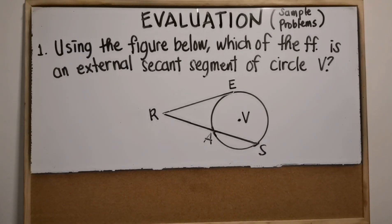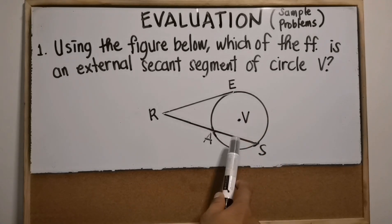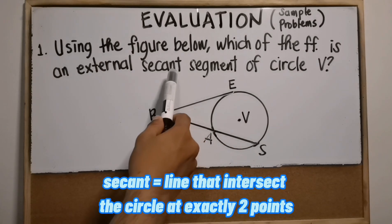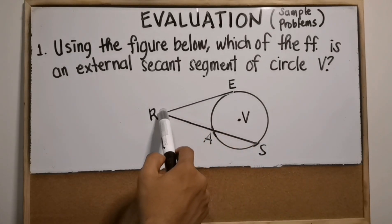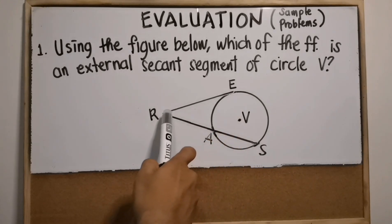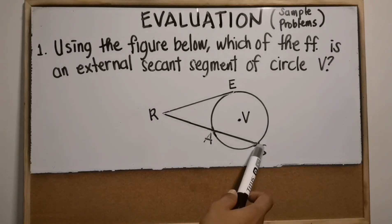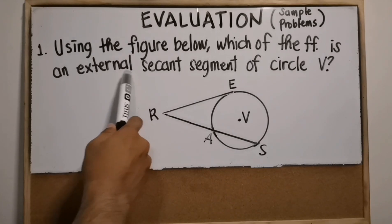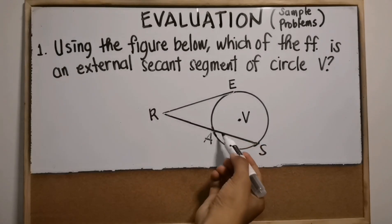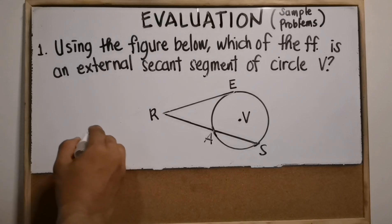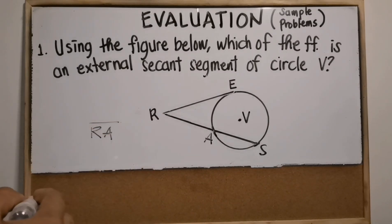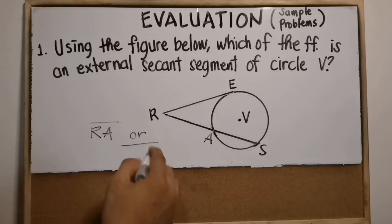Let's start with this problem: using the figure below, which of the following is an external secant segment of circle V? A secant is a line that intersects the circle at exactly two points. One line intersects the circle at only one point, making it a tangent line. The other line intersects the circle at two points, making it a secant. The external secant segment is the outside part — that is segment RA, also named segment AR.